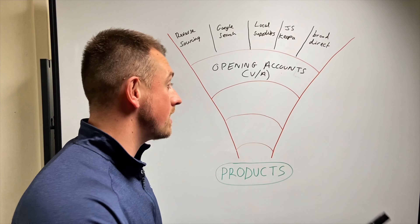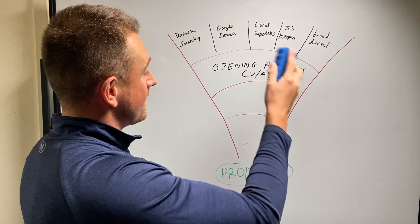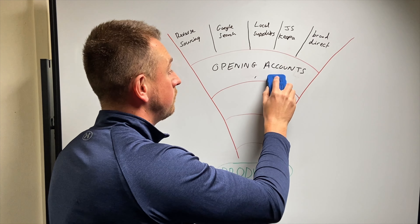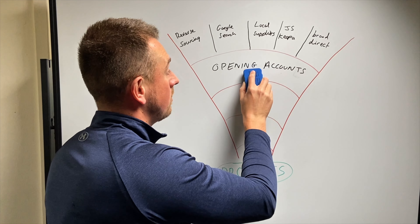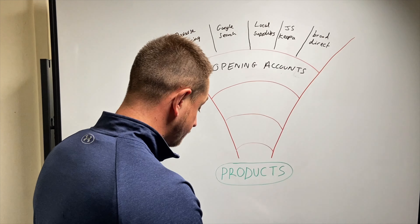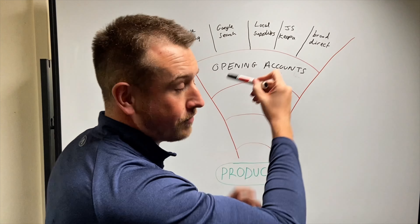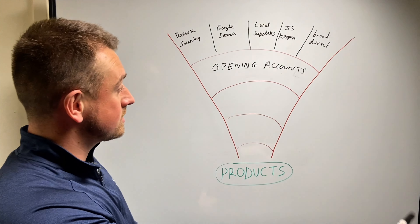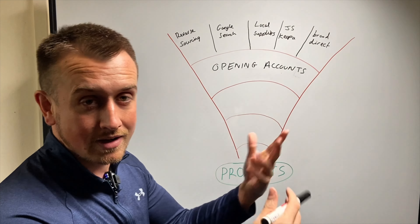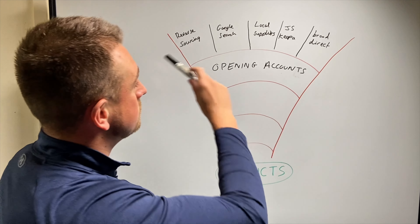Obviously when you're first starting, don't worry about a VA because it's another expense, and you really do need the experience of doing this yourself before you start getting someone else to do it for you. So step two — we've started opening accounts. Again we're filling in our spreadsheets: have we opened it yes or no? Have we been over their stock list yes or no? That's step two.